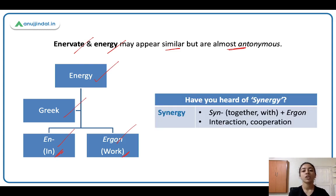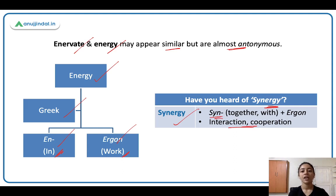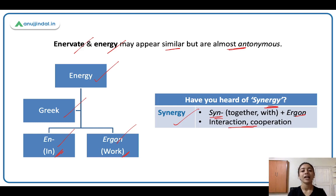There's another word called synergy — you may have heard of this. Synergy ka matlab hai interaction, cooperation. 'Syn' matlab together, saath mein, and 'argon' is work — to work together, to interact, to cooperate. Jaisi team members hoti hai, jo office mein team hoti hai — toh they all work together, they interact, they work with synergy.